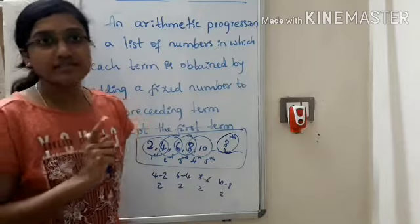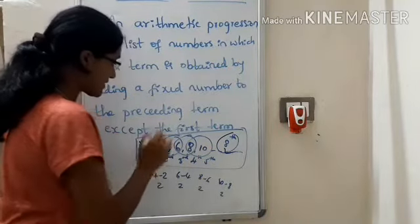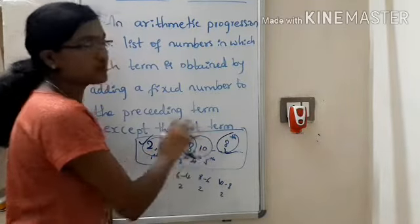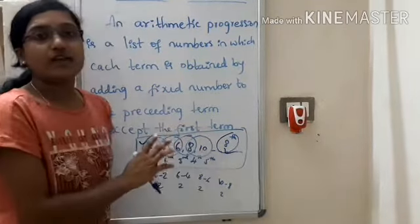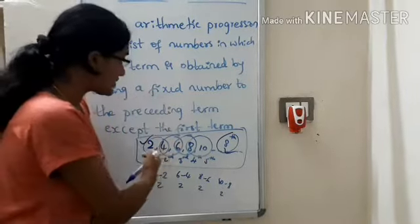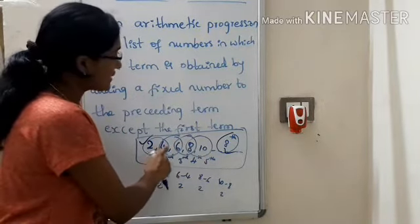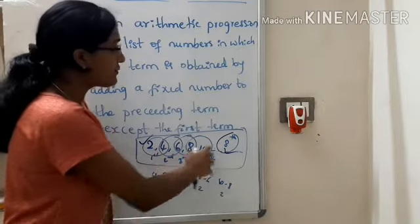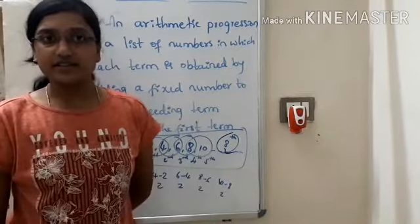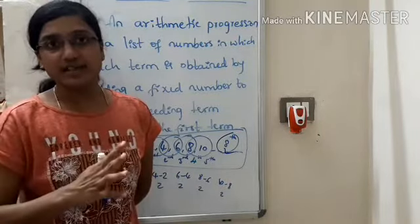The first term is 2, which is the beginning of this pattern. For all remaining consecutive terms, we find which operation is going on to get the second, third, fourth, fifth term, and then we can find out any further terms.